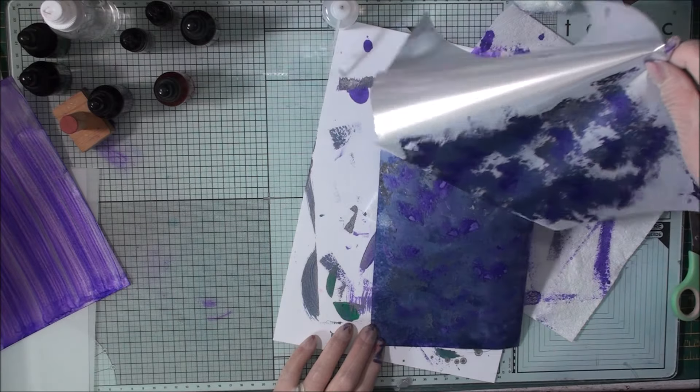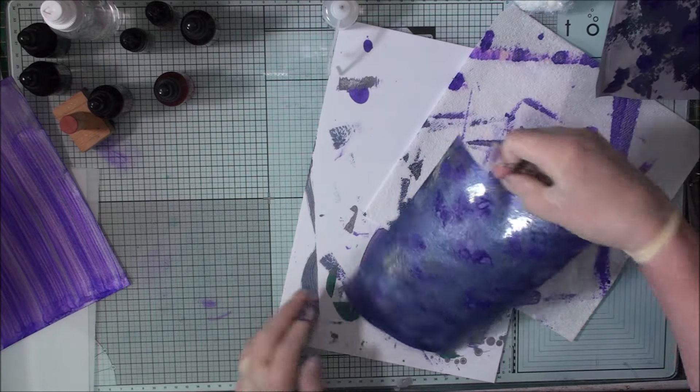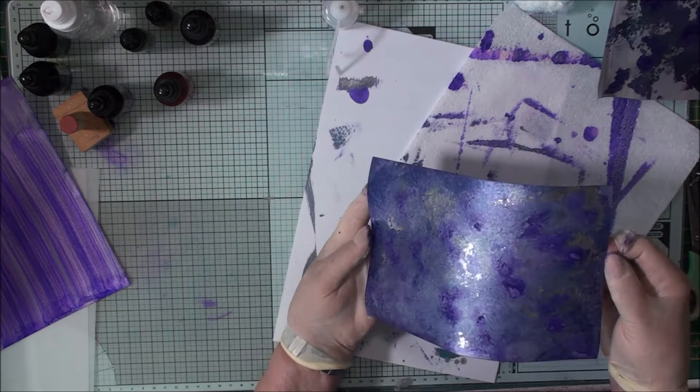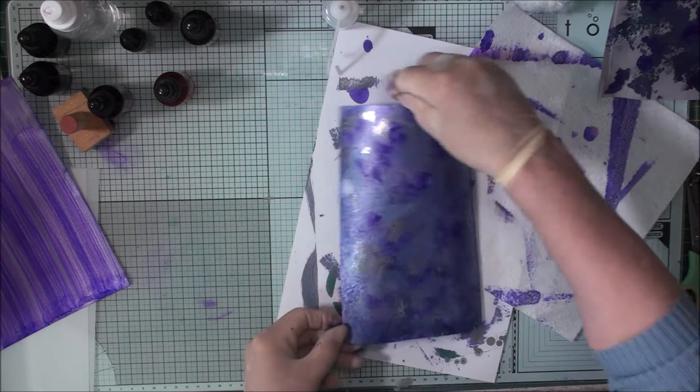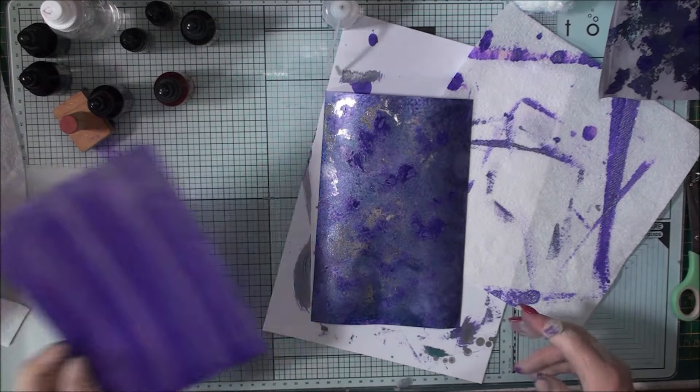So once you lift your foil off, you will have some silver stuck to the sticky areas on your card. So now you can pop that on one side and leave that to dry fully.